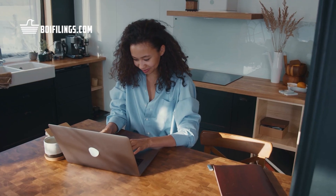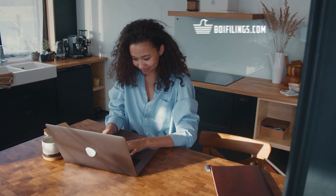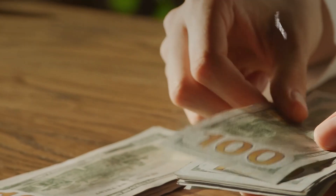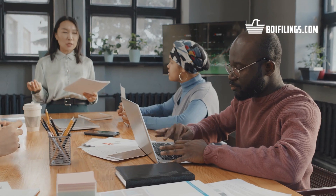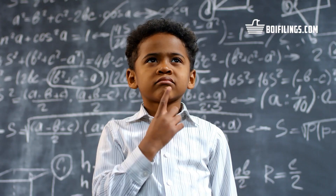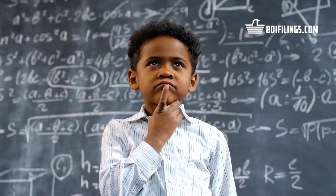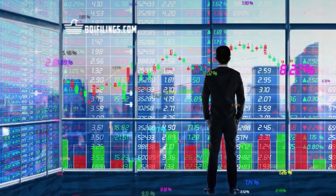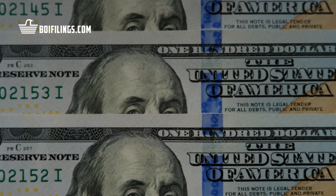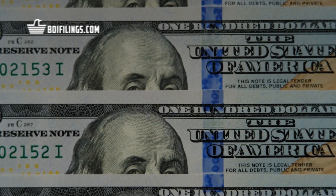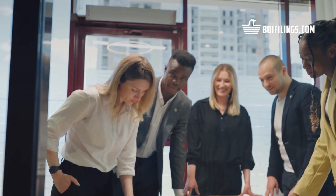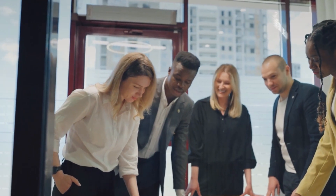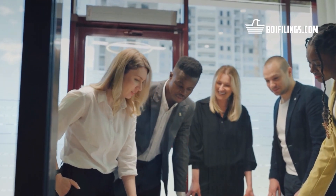The BOI rule aims to provide greater transparency in financial dealings, making it harder for individuals to use complex entity structures to obscure their financial activities. For advisors to businesses, it's essential to guide your clients through this new landscape, ensuring that they're not only compliant, but also aware of the potential risks and opportunities this rule brings.